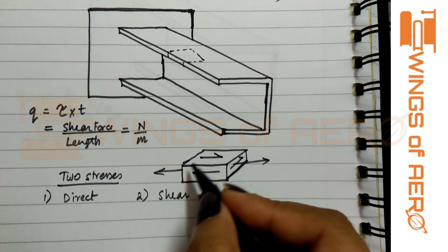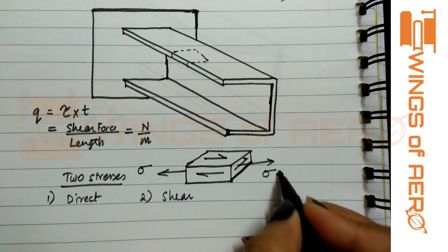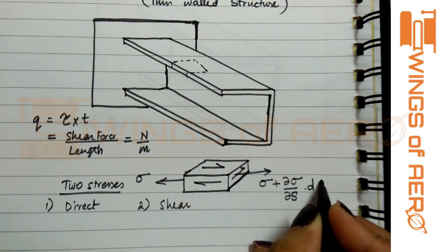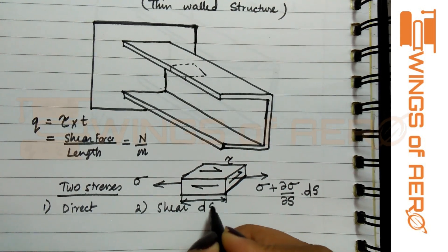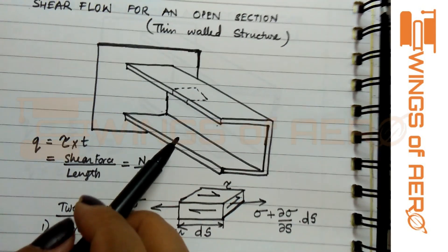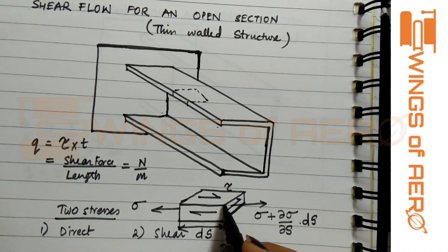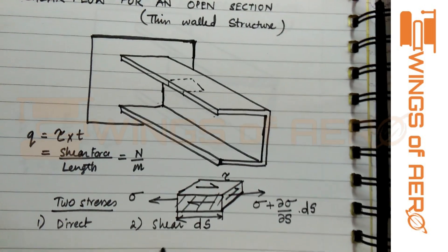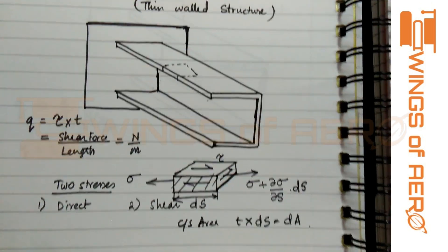Let's assume when the load is applied on this particular section, some amount of shear stress will occur here, and here some change in stress with respect to the surface. And here tau. Now, what is s? We are assuming the small elemental distance as ds and the total element as s. The distance from here to this point is s, and we are taking a small element part, that is ds. The thickness of this element is t. So we can find the cross-sectional area, which is t into ds, that is dA.